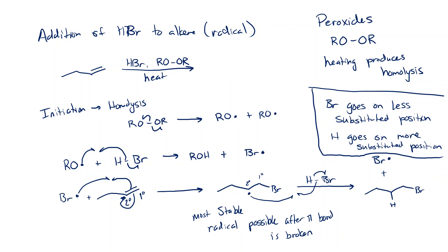The nice thing about radicals is we don't have to worry about rearrangement. You only ever have to worry about the substitution of the two carbons that are part of the double bond. In this case, we only had to worry about the primary carbon and the secondary carbon — the rest of the molecule is pretty irrelevant. Once we add the bromine radical, we make a secondary radical, and that one gets a hydrogen to give our final product.